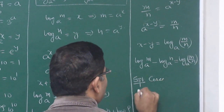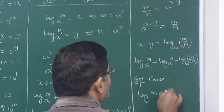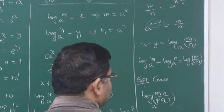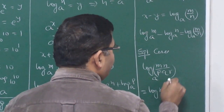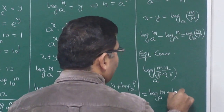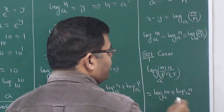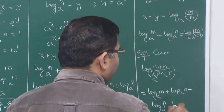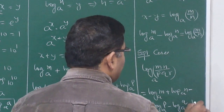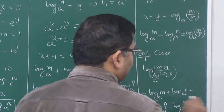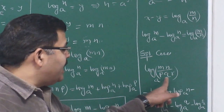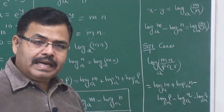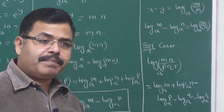A special case: log of (m·n) divided by (p·q·r) to the base a can be written as log m to the base a plus log n to the base a, minus log p to the base a, minus log q to the base a, minus log r to the base a. All terms in the denominator become minus, and all terms in the numerator become plus.